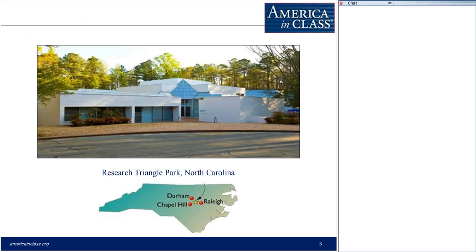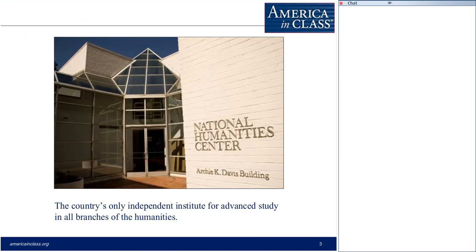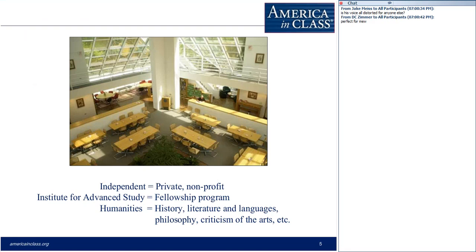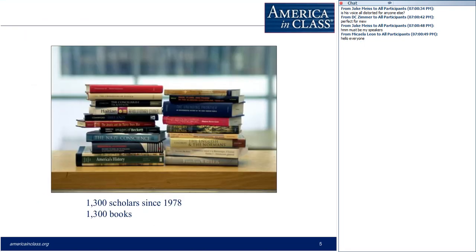We are located in Research Triangle Park, North Carolina. We are the country's only independent institute for advanced study in all branches of the humanities. We're a private nonprofit organization. We run a fellowship program — that's our main program — and we bring scholars from this country and abroad to the center for an academic year to research and write on topics in history, literature and languages, philosophy, and criticism of the arts. We opened in 1978, and we've had about 1,300 scholars work here, producing about 1,300 books as a result.